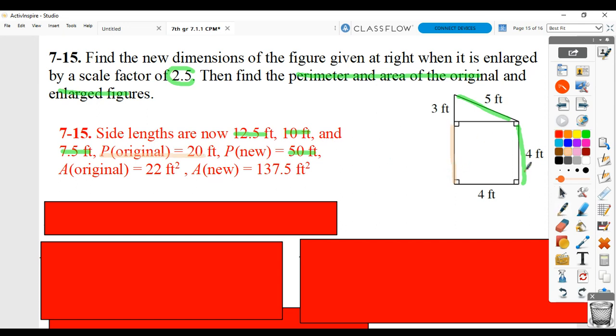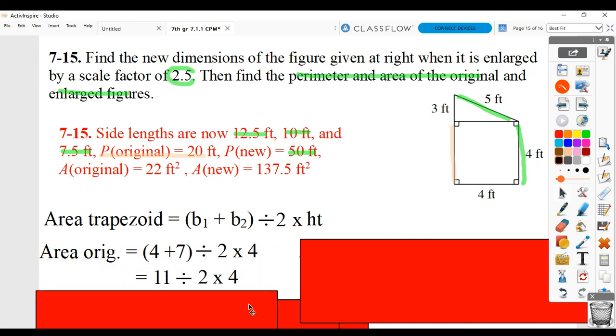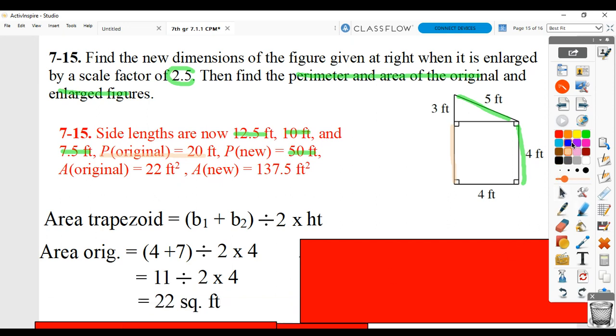Then for the area, this is a trapezoid. So you'd want to use your formula for area of a trapezoid, which is base 1 plus base 2 as a set, in parentheses, divided by 2 times perpendicular height. For the original, that's 4, which is coming from here, plus 7. 4 plus 3 makes 7. Divided by 2 times 4 is the perpendicular height. And you get 22 square feet. That's this answer.